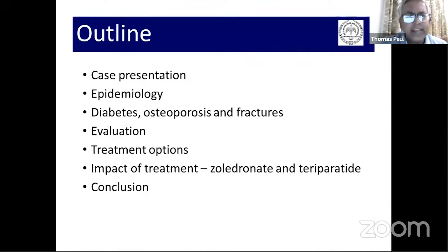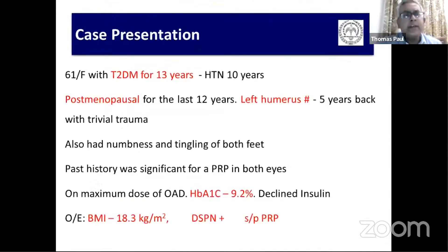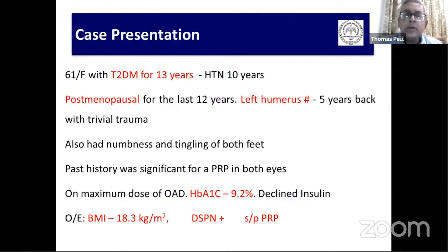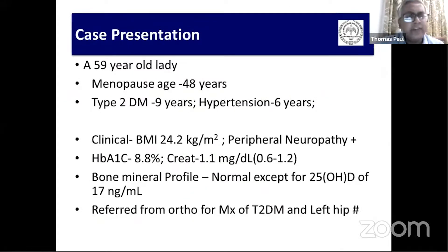I'll start with the case presentation. This is a 61-year-old lady with typical type 2 diabetes for many years, postmenopausal, with an earlier fragility fracture and complications. She has uncontrolled diabetes on maximum oral hypoglycemic agents and has declined insulin. She has a thin BMI and all the risk factors for both fall and fracture.